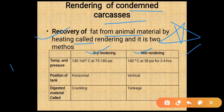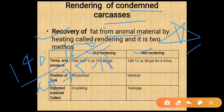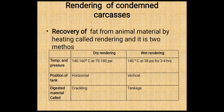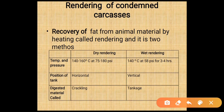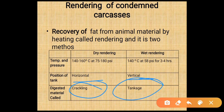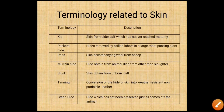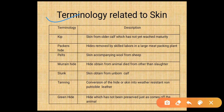Dry rendering is done at a temperature of about 140 to 160 degrees Celsius at 75 to 180 psi. Wet rendering is done at 140 degrees Celsius at 58 psi for 3 to 4 hours. The position of the tank is horizontal for dry rendering and vertical for wet rendering. The digested material in dry rendering is called crackling, and in wet rendering it is known as tankage.